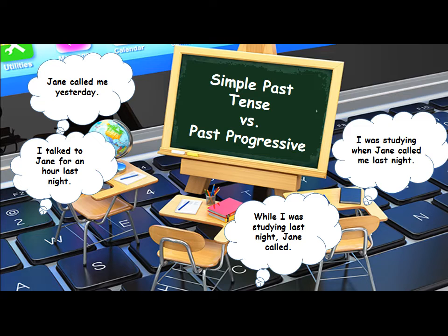Jane called me yesterday. Do you think this is in the simple past tense or the past progressive tense? You're right — it's simple past. Jane called: the action happened and it's done, it's over. Here's another example: I talked to Jane for an hour last night. The verb is talked. You're right — talked is in the simple past tense. It's done. I talked to Jane last night. It's over.